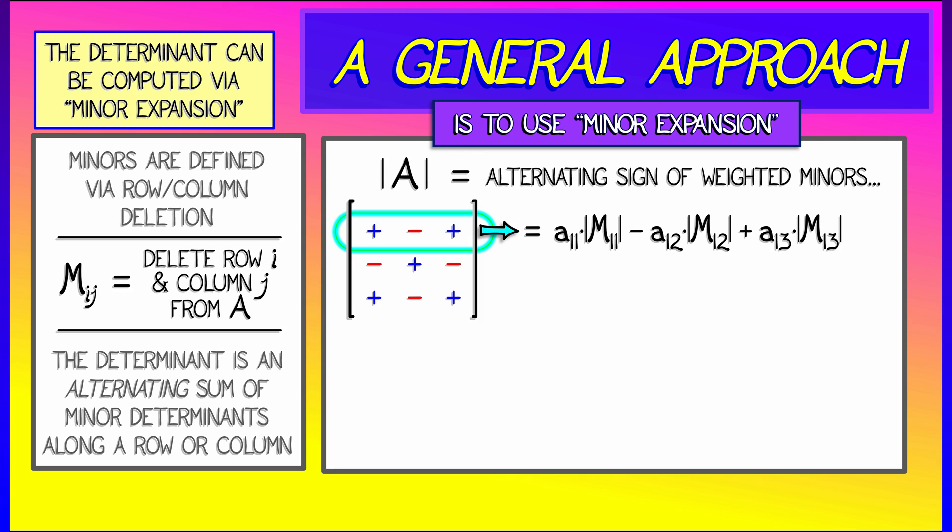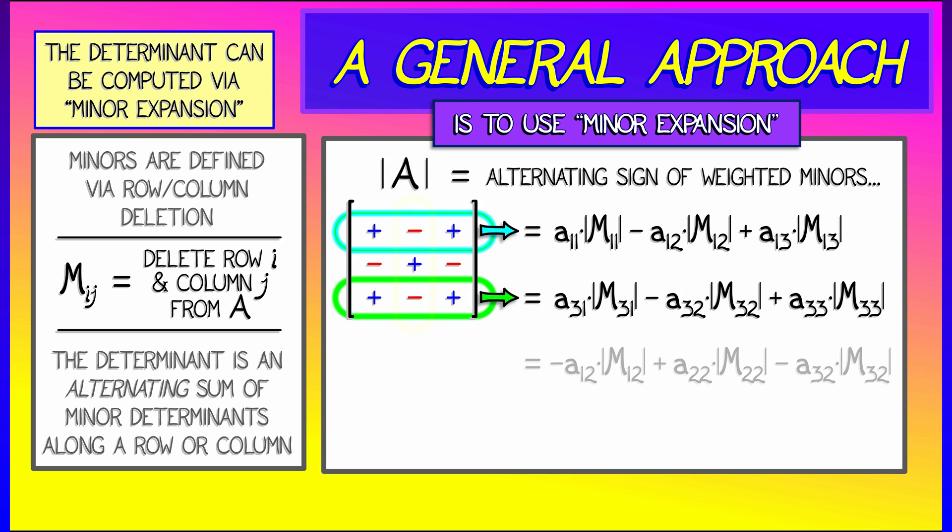When expanding about that first row, we get A11 times the determinant of its minor minus A12 times the determinant of the associated minor plus A13. But you could expand about the last row, the third row in this case, in which case you would get a different looking formula that returns the exact same formula for the determinant of A.